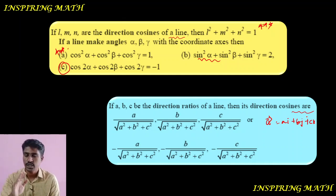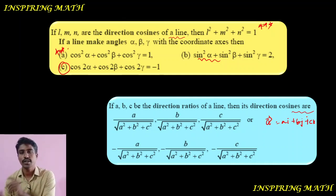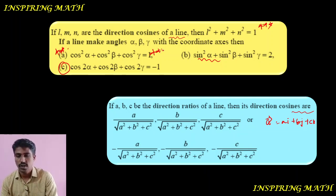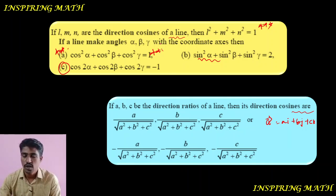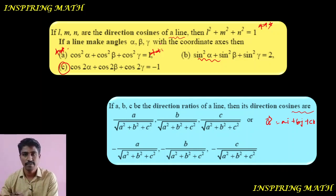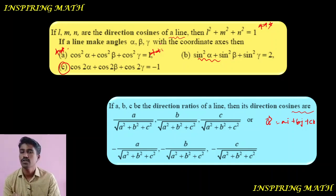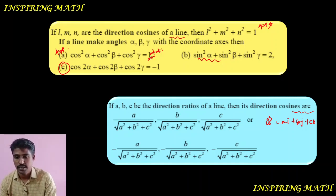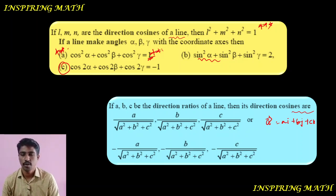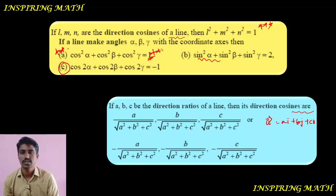This method is used with the formula cos²α + cos²β + cos²γ = 1. Questions are framed using this. For example: the angle made by a line with the x-axis and y-axis are 45° and 60° — find the angle made by the line with the z-axis. This is a question from 2020.